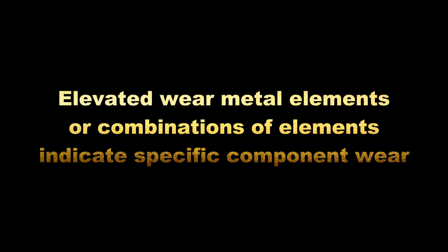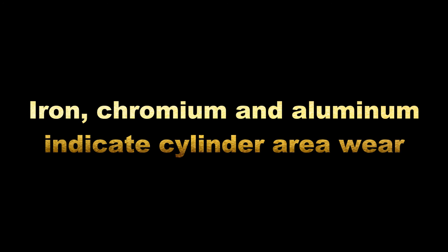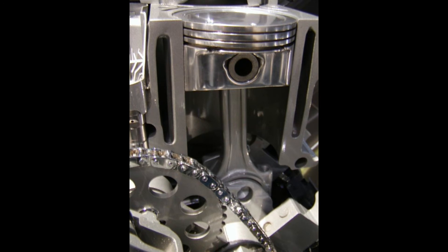Determinations of wear in an engine can be indicated by the presence of either an elevated single element, or more commonly, a combination of particular elements. For example, a combination of iron, chromium, and aluminum commonly indicate wear in the cylinder assembly, since the cylinder sleeve is an iron alloy component, the rings are a chromium alloy component, and the pistons are an aluminum alloy component. All three of these components operate in concert in the same area and are in close proximity with one another.